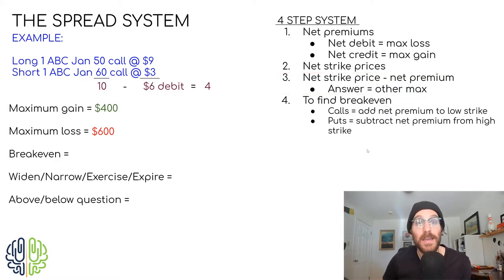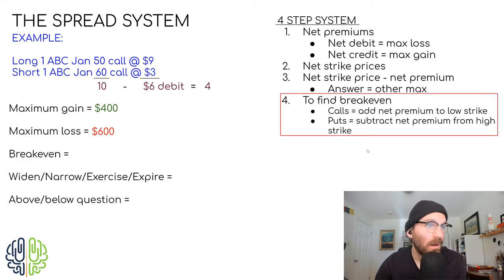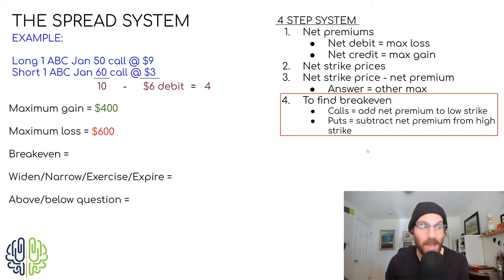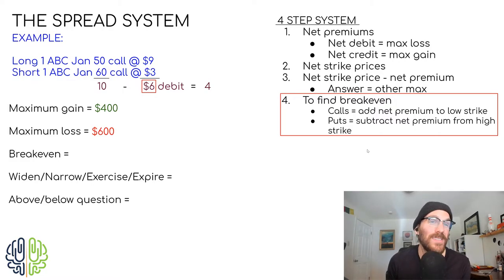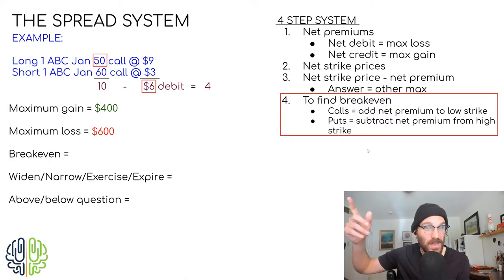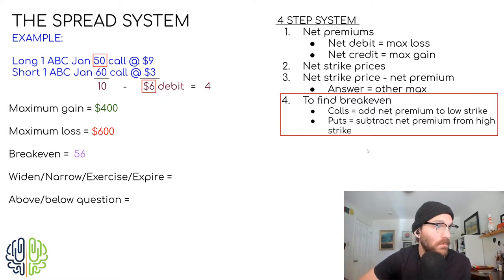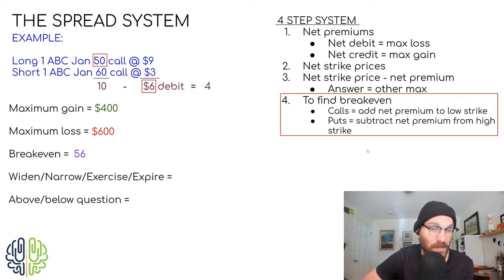The last step is break-even. We have to be aware of what type of spread we're dealing with, because depending on whether it's a call spread or a put spread, we approach this differently. This is a call spread, so we're going to go back to our original net premium of six and add that to the low strike price. Some people use 'call up, put down' for this. This would be call up — we're going to count up from the low strike price — 56. The break-even will always be in between the two strike prices, always. We'd never find a break-even below 50 or above 60.